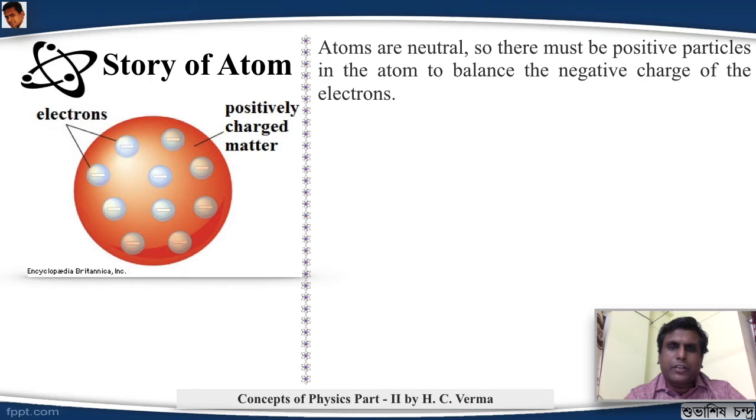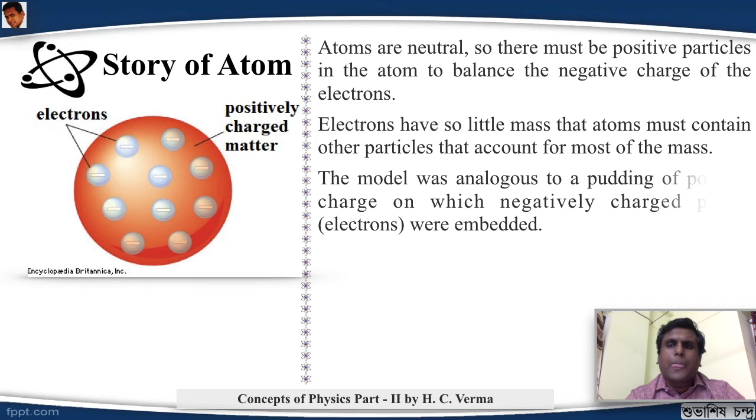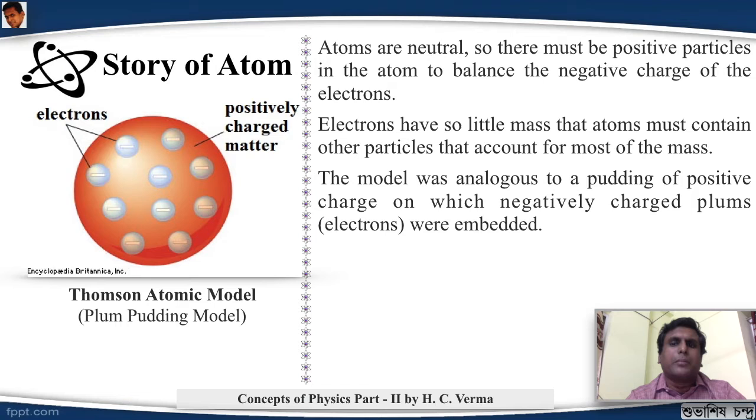According to this knowledge, J.J. Thompson gave a new atomic model. As the atoms are neutral, so there must be positive particles in the atom to balance the negative charge. So electrons have so little mass that atoms must contain other particles that will account for most of the mass. So he said that there will be a positive charge, a big positive charge, on which the negative charges are embedded. He called it the Thompson atomic model or the plum pudding model.